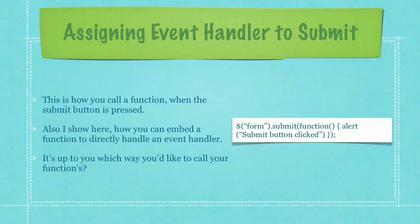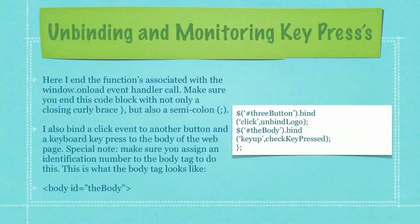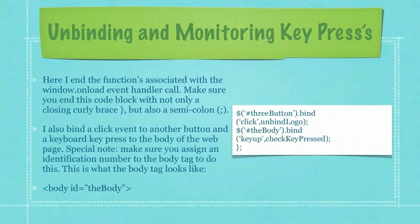This is how you call a function when the submit button is pressed. I also show here how you can embed a function to directly handle an event handler, and it's up to you which way you'd like to call your functions. Here I end the functions associated with the window.unload event handler call. Make sure you end this code block with not only a closing curly brace, but also a semicolon, because this is a common error people make. I also bind a click event to another button and a keyboard key press to the body of the web page.